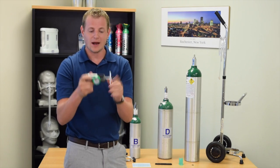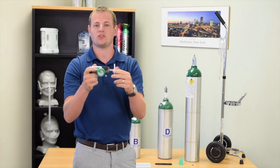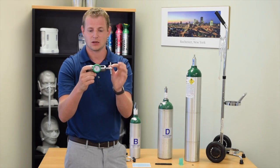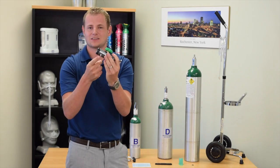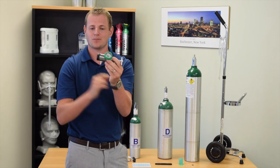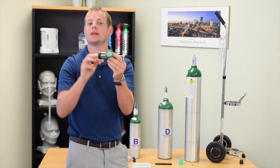Each regulator has a T-bar, which can be spun to the out position when placing on a tank, a gauge which should read zero at this point, and a spot for your oxygen cannula, as well as a dial for setting liter flow.